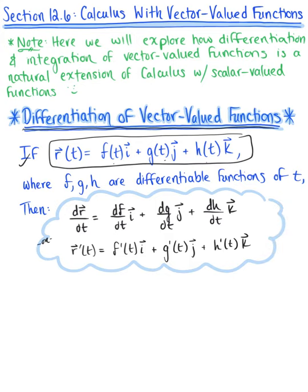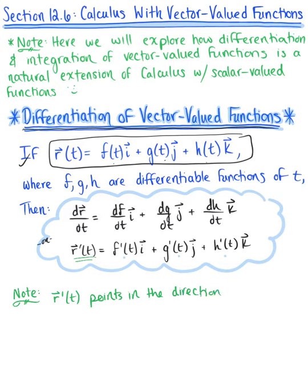We can see here that we can differentiate a vector-valued function component by component for simplicity. Before we go on to looking at the differentiation rules, one important observation: the vector r prime of t points in the direction of the curve at point t, or point p — similar to what we know from scalar-valued functions. For this reason, we say that r prime of t is a tangent vector at some point, as long as it's not the zero vector.